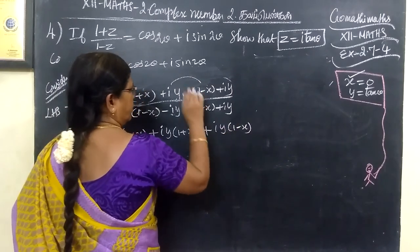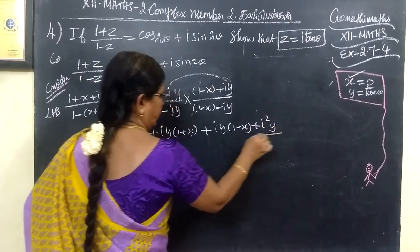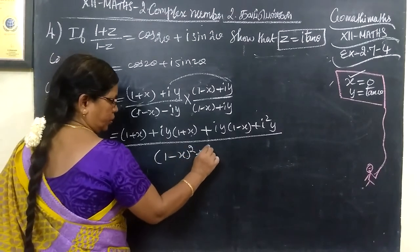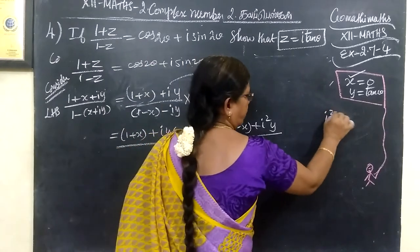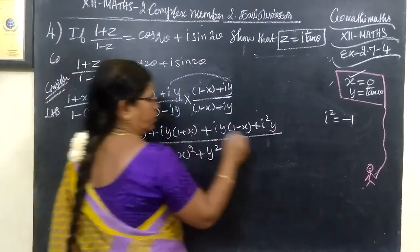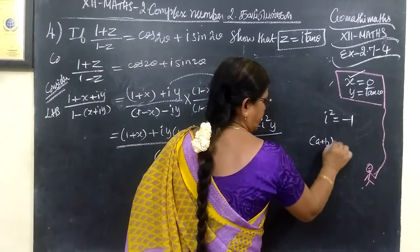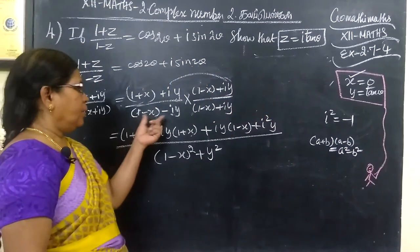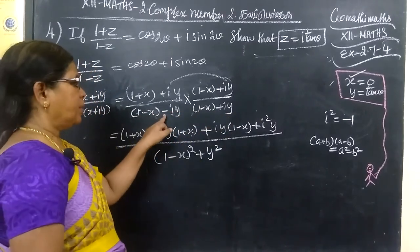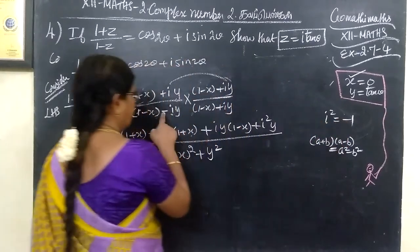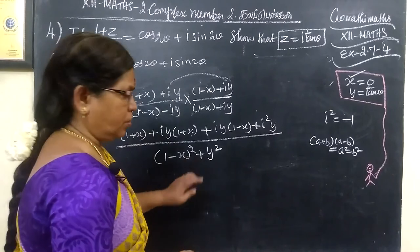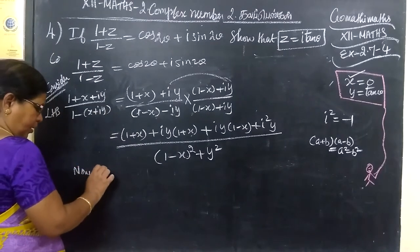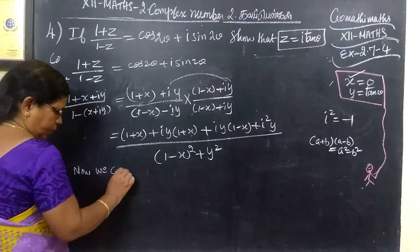Multiply by i squared. Since i squared equals minus 1, and using the formula a minus b equals a squared minus b squared. Now we compare the imaginary part.